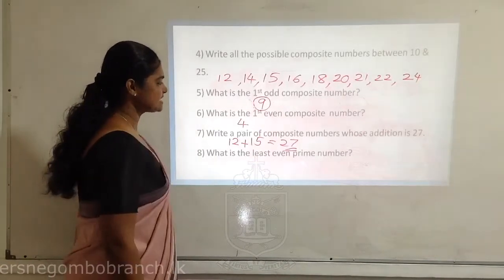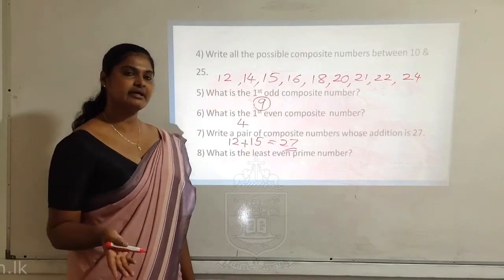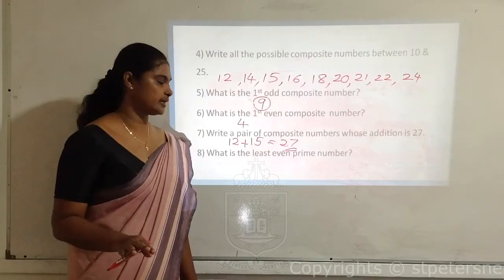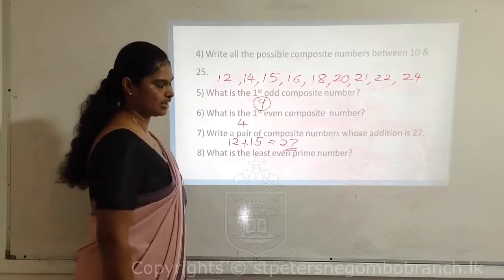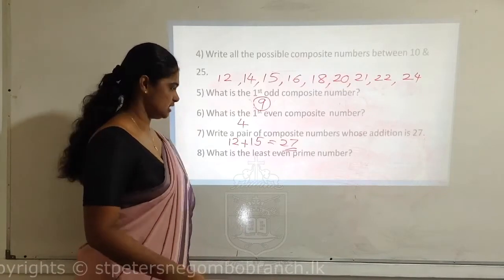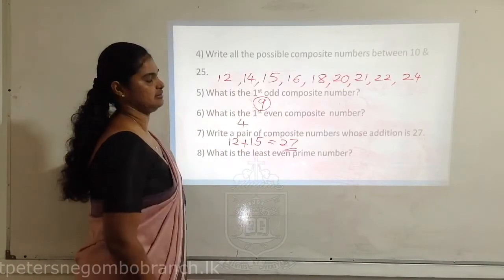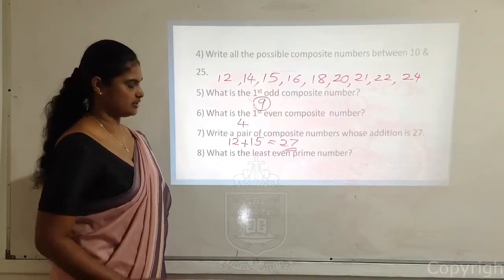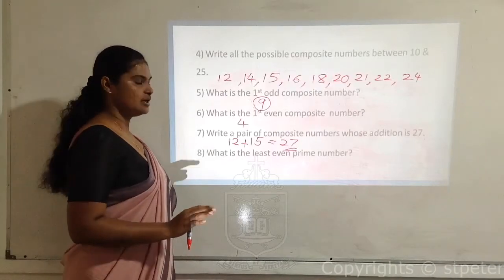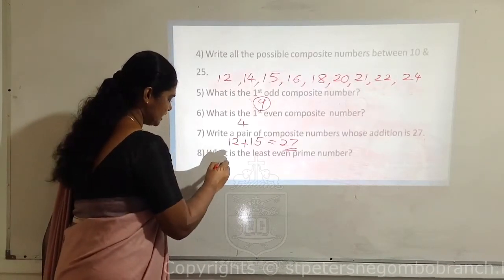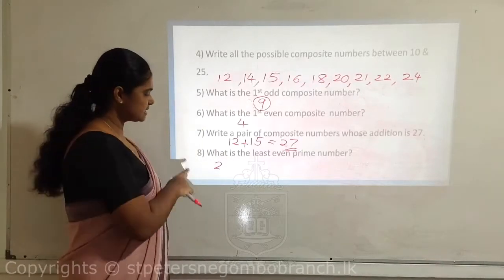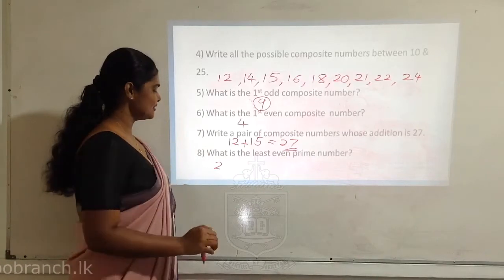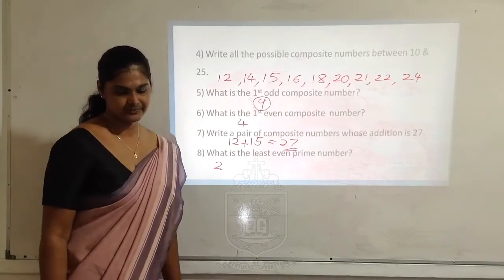What is the least even prime number? A prime number is divisible only by one and by itself. Least means smallest. The smallest prime number is 2. Is 2 even? Yes — it is divisible by two without any remainder. So 2 is the answer: 2 is the least even prime number.